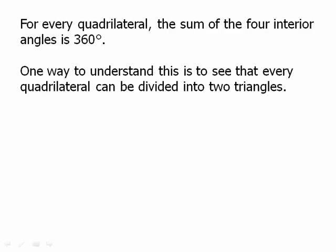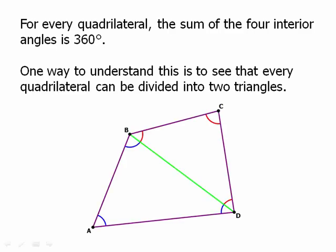One way to understand this is to see that every quadrilateral can be divided into two triangles. Here we have a random quadrilateral, and we draw the line from B to D, and we can see we have two triangles. In triangle ABD, we have the three blue angles — they have to add up to 180. In triangle BCD, we have the three red angles — those have to add up to 180. The angles in the whole quadrilateral ABCD is just the sum of the red angles plus the blue angles, so red plus blue equals 180 plus 180, that's 360. That's why every quadrilateral has a sum of angles of 360.